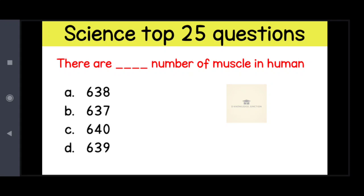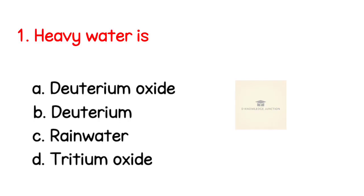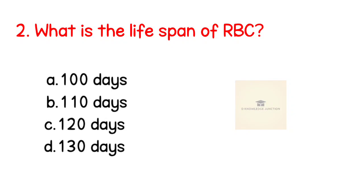First question: Heavy water is? Right answer is deuterium oxide. Second question: What is the lifespan of RBC? Right answer is 120 days.